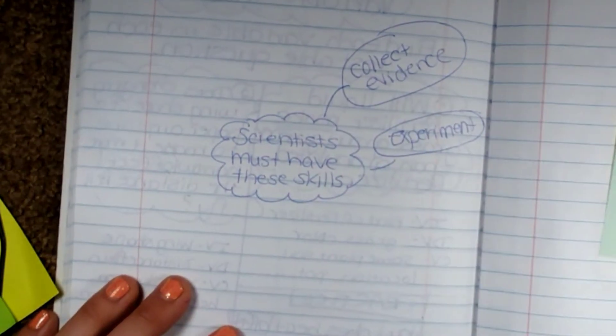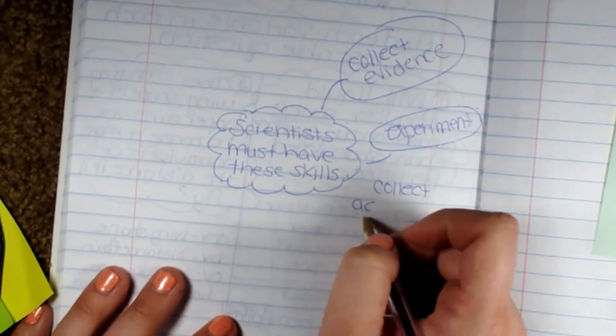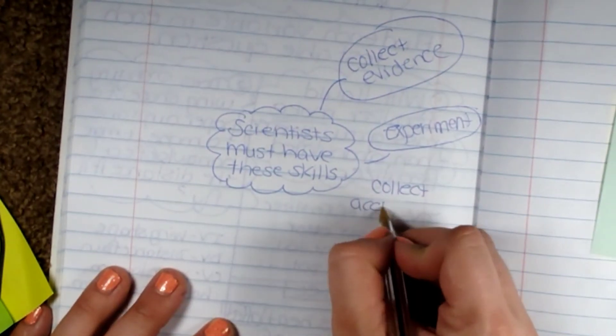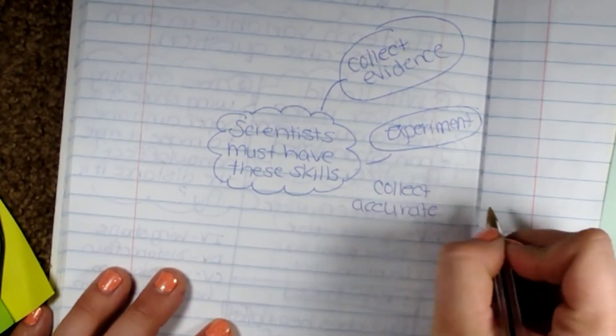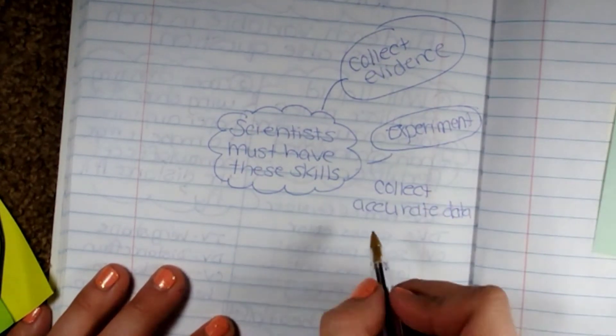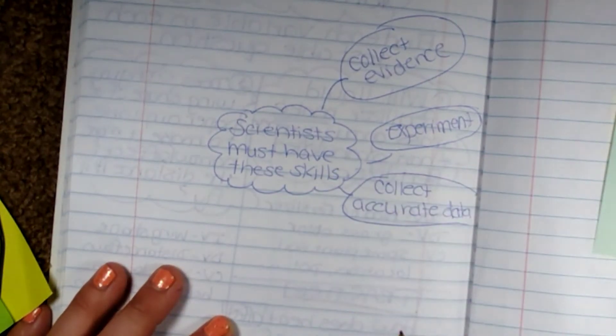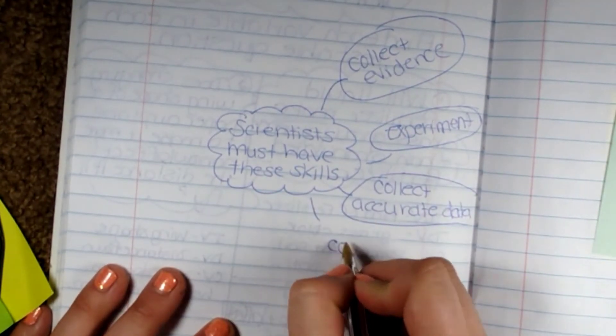They have to be able to collect accurate data, because if the data isn't accurate, why are they doing their experiment? They have to be able to communicate well.